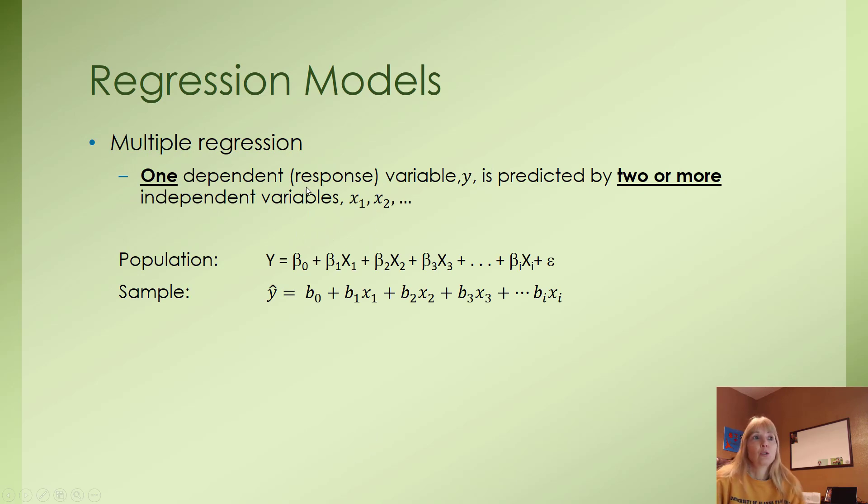When we move into multiple regression, we still have one y, one dependent variable - often called the response variable now - and it is predicted by two or more independent variables. So what if more than one thing is predicting our dependent variable? The setup is very similar, but now we continue to add on each independent variable, however many we have in our model.